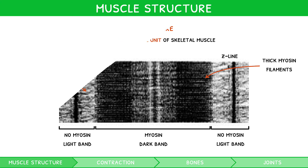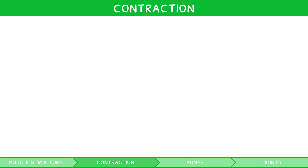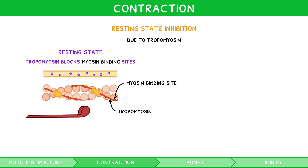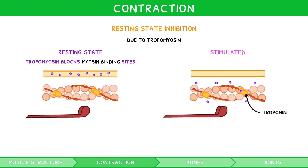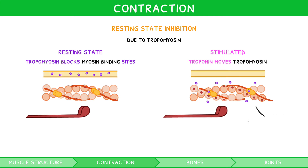So, you now understand the structure, but what causes muscles to contract? Muscles do not contract continuously, and so in their resting state must be inhibited. This occurs thanks to a protein known as tropomyosin, which blocks binding sites on actin filaments to prevent myosin heads from binding. When stimulated to contract by a motor neuron, the sarcoplasmic reticulum releases calcium ions that bind to a protein called troponin. This changes conformation and subsequently moves tropomyosin, exposing the actin binding sites to allow for contraction to occur.